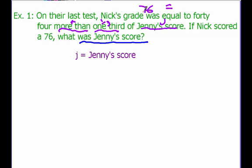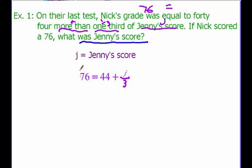The equation we can come up with is 76 equals J divided by 3, plus 44. One-third and dividing by 3 mean the exact same thing. So we have Nick's score, 76, is equal to 44 more than one-third of Jenny's score.